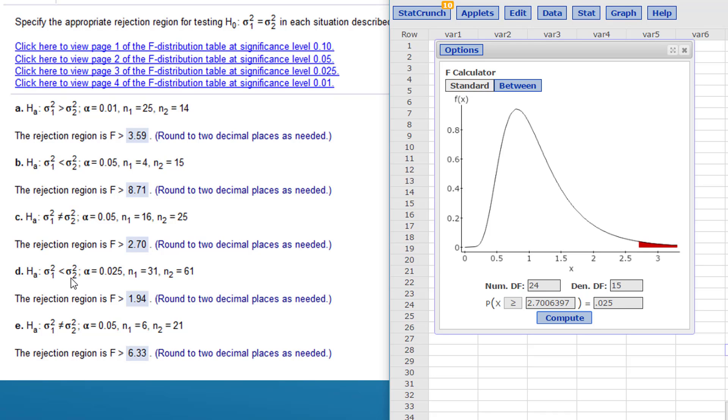The fourth problem is again a left tail test. The variance of sample 1 is less than the variance of sample 2. We put all of alpha in that right tail, and we'll go over here and since variance 2 is larger, that'll be 60 and 30, get those in there right, and my alpha is 0.025, whoops 0.025. Make sure we've got it in there right, to compute, and we get 1.94 as our critical value of F.